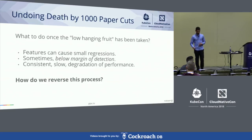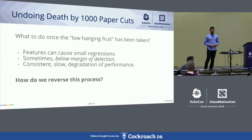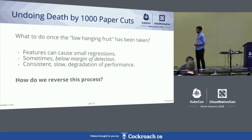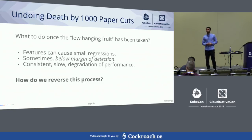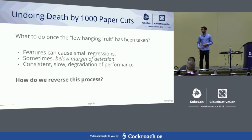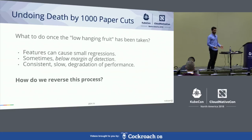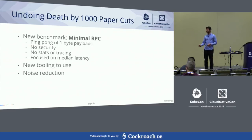Three important facts to call out: features can cause small regressions, and these small regressions might be below your margin of detection. If you have no benchmarking system that can detect regressions, then every regression is below the margin of detection by definition. Or if your benchmarking system lacks coverage — maybe you have rich benchmarks on insecure scenarios, but a regression slips into a secure pathway. Or if the benchmark is noisy and can't catch regressions. Regardless, the result is consistent slow degradation of performance. We asked ourselves: how do we reverse this process? The answer was better benchmarks, better tooling, more data.